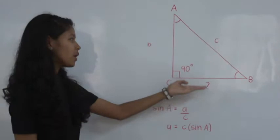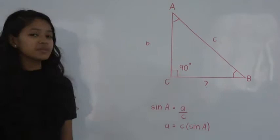Using cross multiplication, we derive the formula to solve for side A. Thus, A is equal to C times sine A.